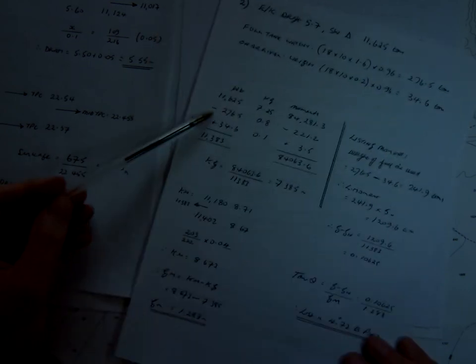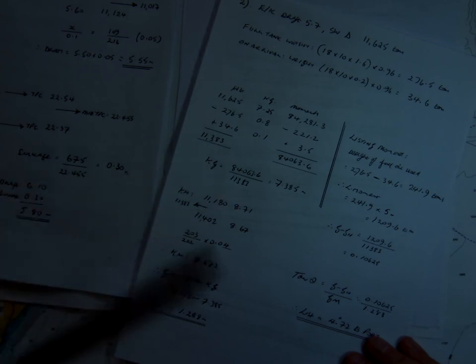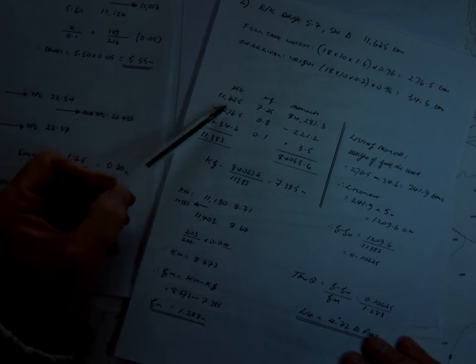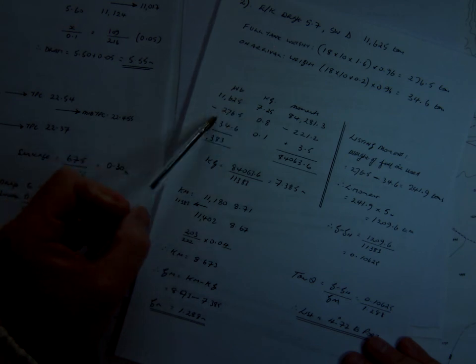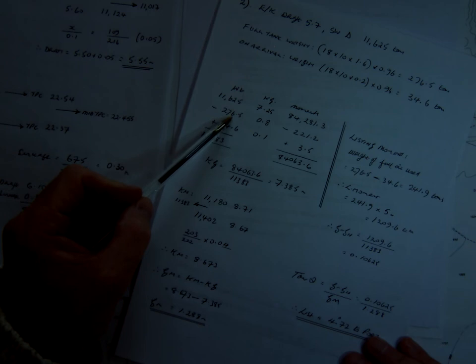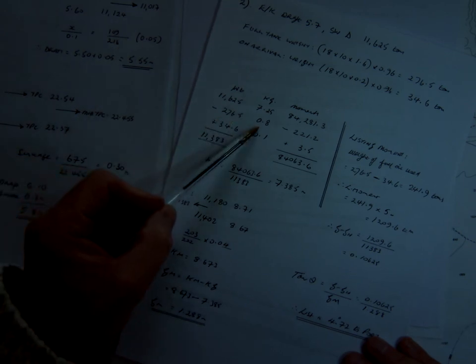There's two ways that you can calculate the final KG, which then leads us to the GM. One way I've written here, we've got the initial displacement and KG 7.25. Then what I've said was, okay, let's take all the weight out of the tank, so it's minus 276.5 at 0.8 KG,